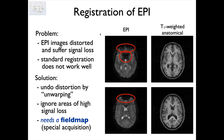We can solve some of that. We can unwarp some of the geometric distortions and we can take account of the signal loss, but we're never going to get that signal back. In order to do that, we need a field map, which is a special acquisition.